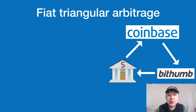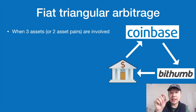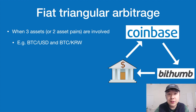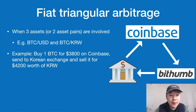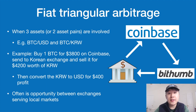Fiat triangular arbitrage involves three assets — two asset pairs with one shared asset between them. For example, Bitcoin/USD and Bitcoin/Korean won — Bitcoin is the shared asset, giving three total. You buy one Bitcoin for $3,800 on Coinbase, send it to a Korean exchange, sell it for $4,200 worth of Korean won, and then convert that Korean won to USD at a bank for a $400 profit. This opportunity often exists for exchanges serving local or regional markets.